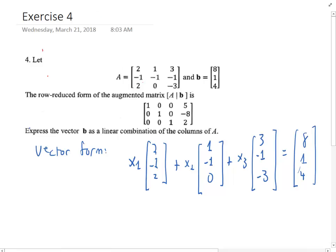Well, that's right here. This equation here says that 5 is equal to x1, minus 8 is equal to x2, and 2 is equal to x3. So there you have it.